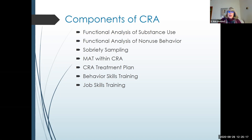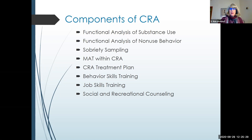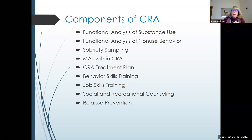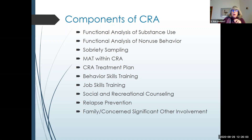Job skills training is very much a part of this — everyone needs a purpose and important activity. Social and recreational counseling: oftentimes we really do have to teach somebody how to recreate, especially if most of their social and recreational activity has been associated with substance use. There is also a relapse prevention component — we talk about preventing relapses and how to mitigate them if they do occur. Finally, we really look at how family and concerned significant others can help the patient move forward differently.